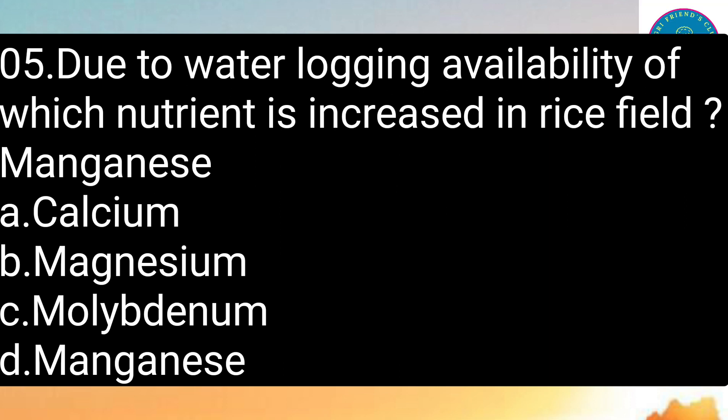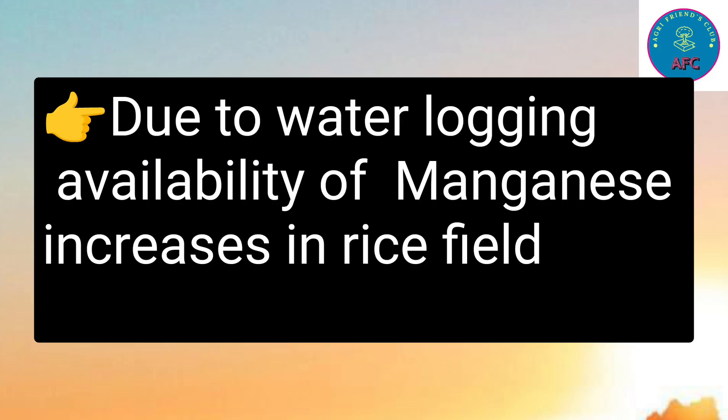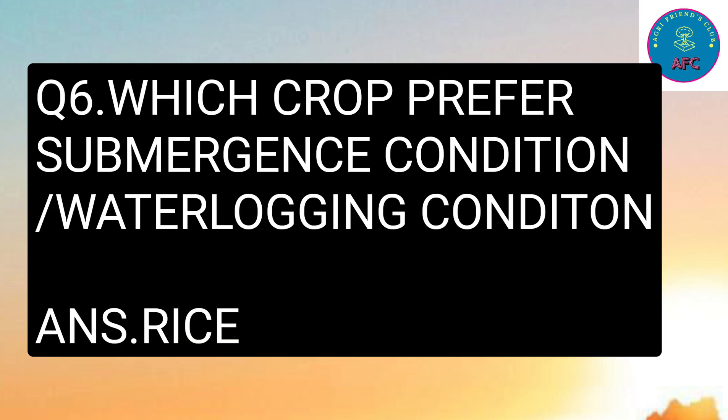Question number 5: Due to water logging, availability of which nutrient is increased in the rice field? The options are calcium, magnesium, molybdenum, or manganese. Due to water logging conditions, the availability of manganese increases in the rice field.